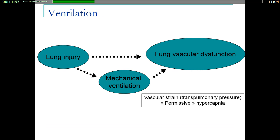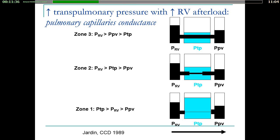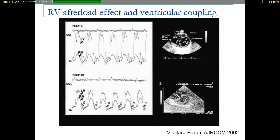So there are many anatomical derangements, and on top of that you add mechanical ventilation, which increases volumes and pressures, induces lung strain, and strategies like permissive hypercapnia can worsen the situation. Concerning the mechanical effects of ventilation, there is a compression of vessels on venous return, which decreases preload of the right ventricle, and also a compression of capillaries due to the increase in transpulmonary pressure, which increases the afterload of the right ventricle.